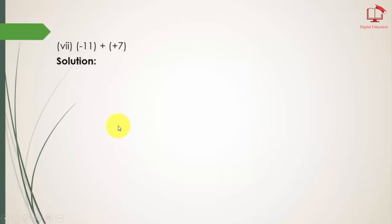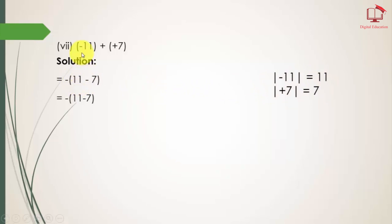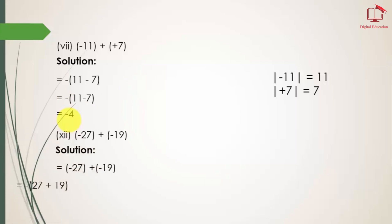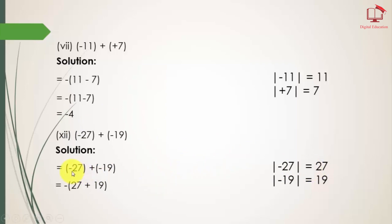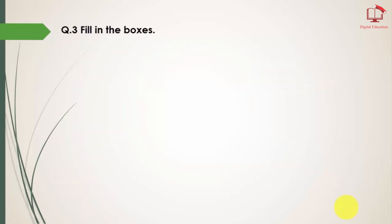Part number 7: same as previous questions, firstly we write the absolute integers — that is 11 and 7. If we take the minus as common it becomes positive, and the other term becomes negative. Subtracting the smaller from the larger gives 4, and we write the minus sign as it is. Part number 12: the absolute integers are 27 and 19. Taking minus as common, both become positive. 27 minus 19 gives 46 and we write this minus as it is. Question number 3: fill in the blanks.